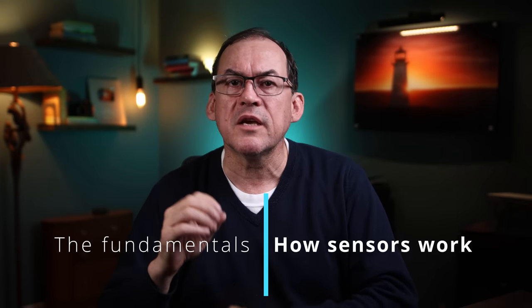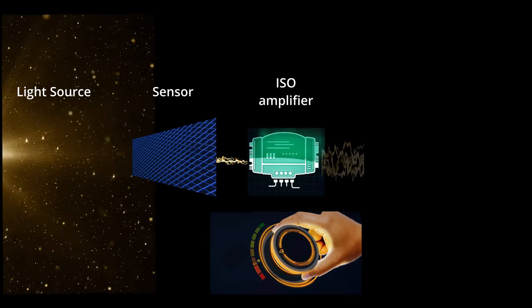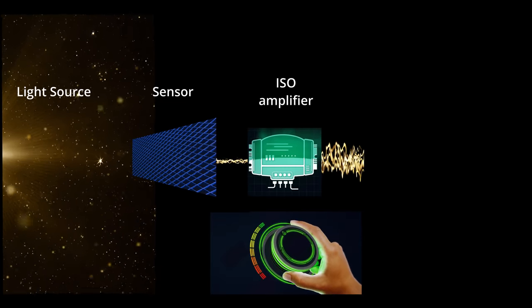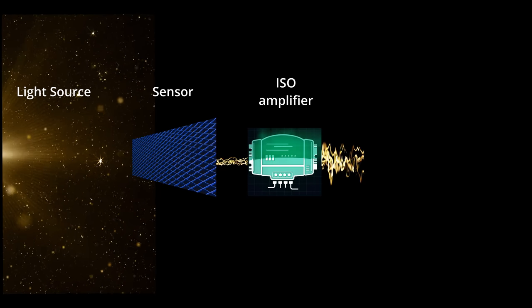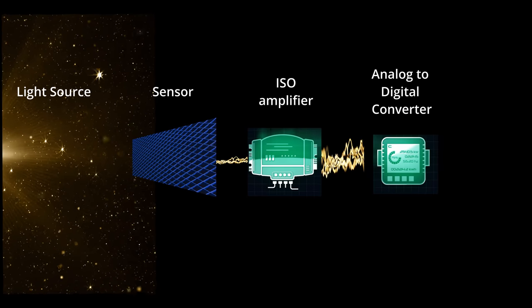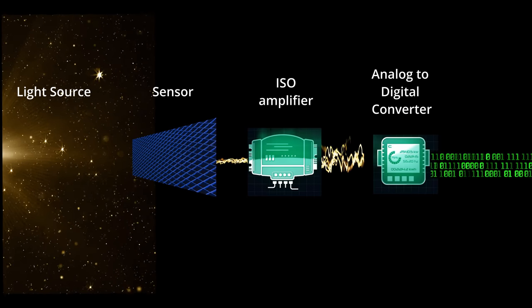The way sensors work is they contain millions of photosites which capture photons that are measured as an electrical charge. We call these pixels after they're converted to a digital signal. This charge is then amplified by the ISO amplifier, which applies a magnification factor to the signal to brighten it depending on the setting of your ISO. The signal is then converted from an analog charge to a digital value in an analog-to-digital converter.